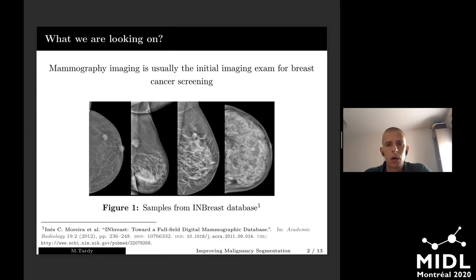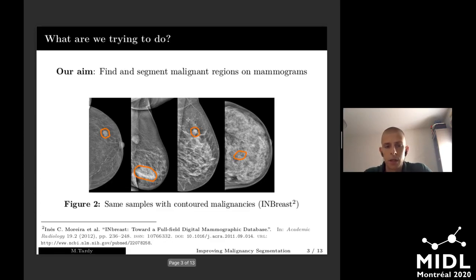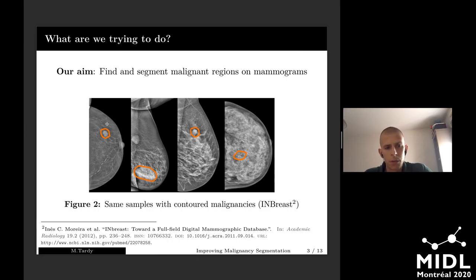We are looking at breast X-rays, which are the most common exam for breast cancer screening, and we're trying to figure out where the malign regions are. Sometimes it can be quite simple, but usually it's not that obvious and the malign regions can be hidden by a whole bunch of dense tissue.